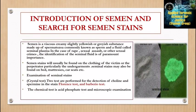Semen is a viscous, creamy, slightly yellowish or grayish substance made up of sperm — commonly known as spermatozoa — and a fluid called seminal plasma. In cases of rape, sexual assault, or other sexual crime, the identification of seminal fluid is of paramount importance. Semen stains will usually be found on the clothing of the victim or perpetrator, particularly the undergarments, and may also be found on bed mattresses, car seats, etc.